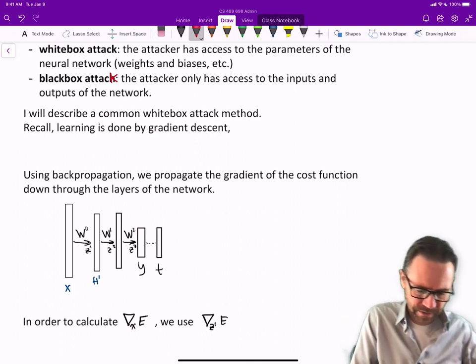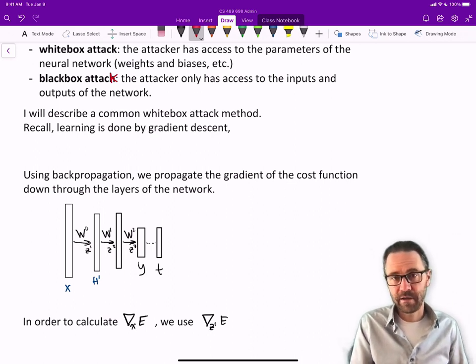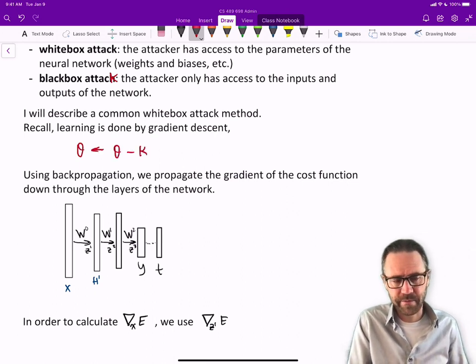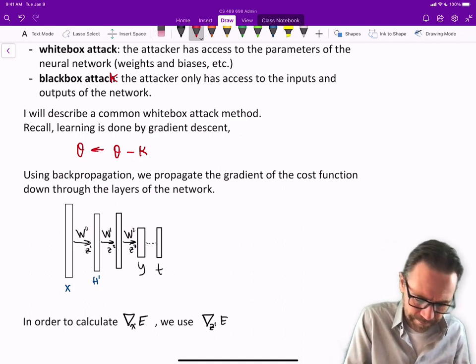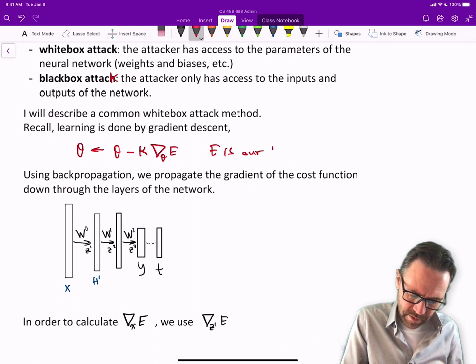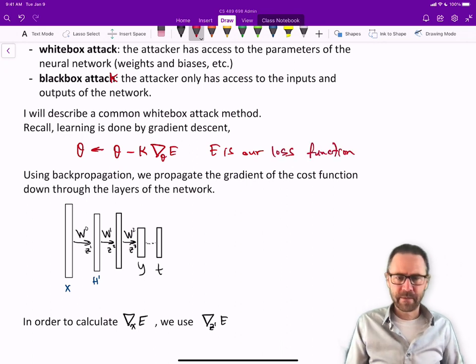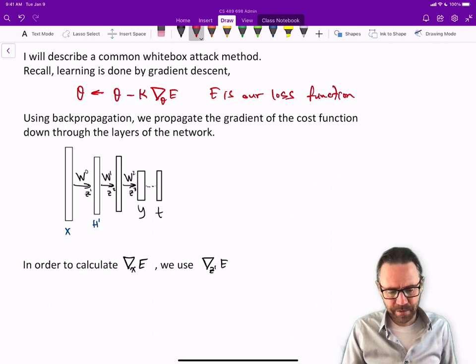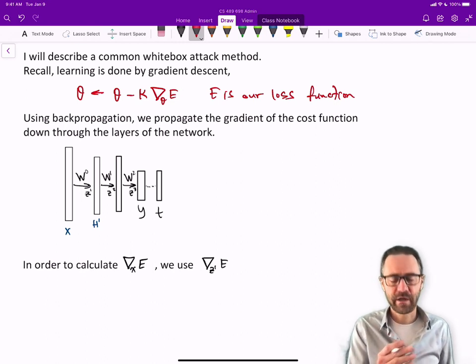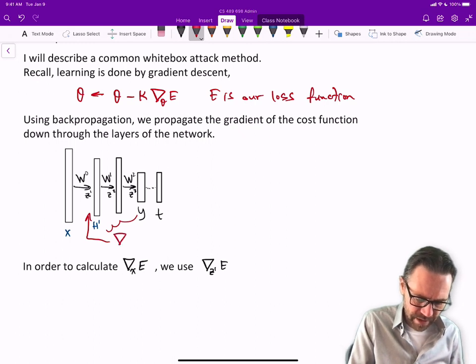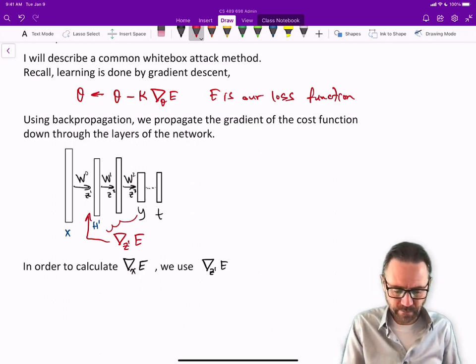Recall that learning is done by gradient descent. If we have our parameters theta in our model, then we update theta as theta minus some learning rate or gradient step multiplier times the gradient of our cost or loss E. During backprop we propagate the gradient of the loss down through the layers of the network. We work our way down until we get, for example, the gradient of E with respect to z1, the input current to the first hidden layer.